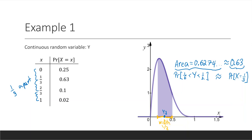In other words, we've used this probability density function to turn these probabilities of our discrete random variable into probabilities of intervals of our continuous random variable. That's the idea of a good approximation. One can continue this calculation to find that the probability of an interval of width one-third centered at two-thirds is approximately 0.1, and similarly the value we get for 1 is approximately 0.02.